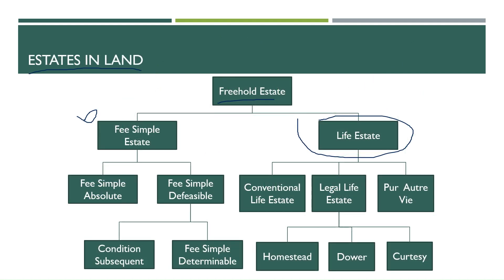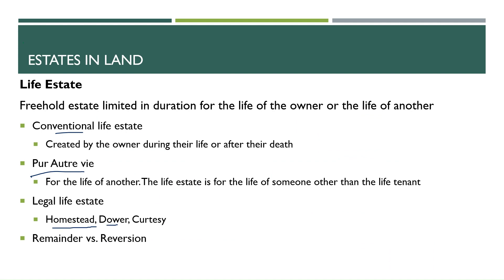So back to the slide where we started. We've covered conventional and per autre vie. Now we're going to look at legal life estate. These are things that have been set in place by the law — this is not something that you and I can actually establish, but these are protections that are out there to protect individuals who own real estate. The three are: homestead, dower, and courtesy.